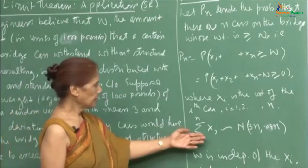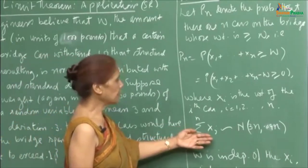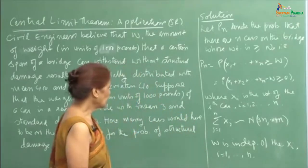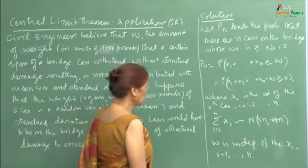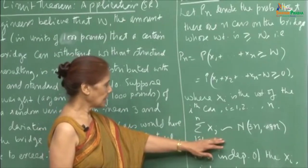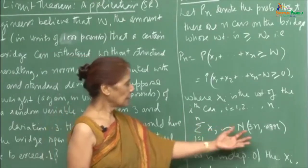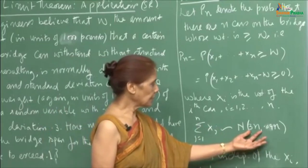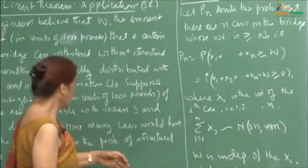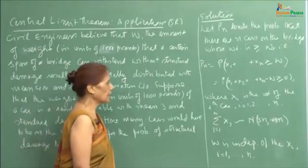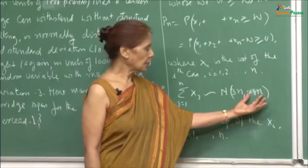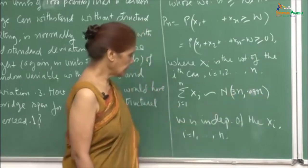This is the total weight of the n cars on the bridge at that time. By the central limit theorem, for n large, when the Xᵢ are identically distributed independent random variables — because the weight of each car is independent of the others — the sum ΣXᵢ (i from 1 to n) is approximately normal with mean 3n and variance 0.09n, since the standard deviation is 0.3 so the variance of each car is 0.09.